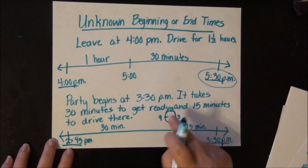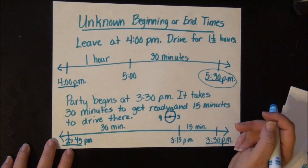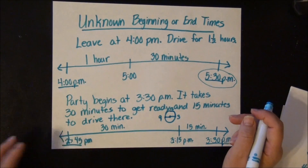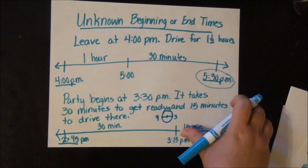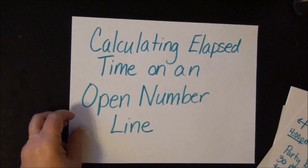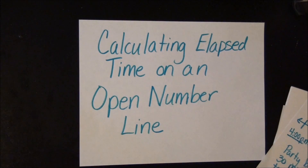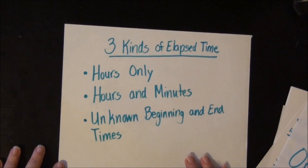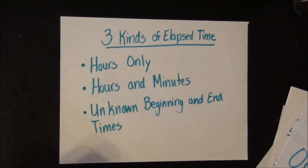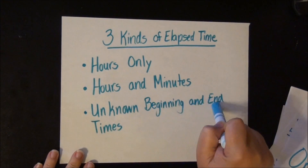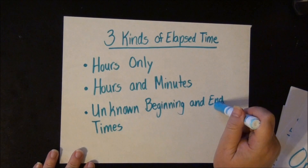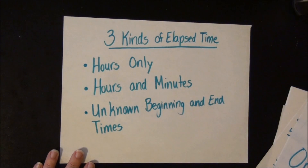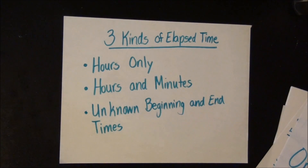This one's a little trickier because you have to work backwards — you really have to know your clock to do this. So that is how you calculate elapsed time on an open number line. As I said, you'll have three kinds of problems: where you know the hours only, hours and minutes, and where you have unknown beginning or end times. The hardest one is where you know the end time and have to figure out the beginning time, but it's all doable on the open number line.